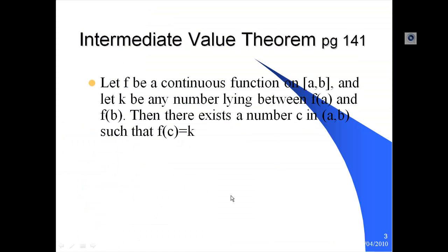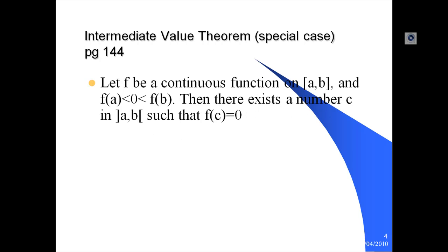The Intermediate Value Theorem can be found in the David Brennan text, page 141. It says that if f is a continuous function on a closed interval [a, b], and k is any number lying between f(a) and f(b), then there is a number c in the open interval (a, b) such that f(c) = k. In particular, if f(a) < 0 < f(b) — meaning f(a) and f(b) have opposite sign — then there is a c in (a, b) such that f(c) = 0.